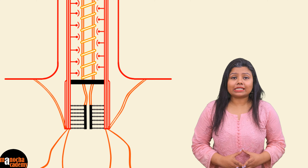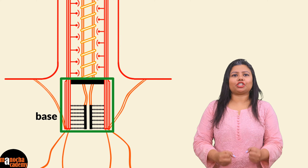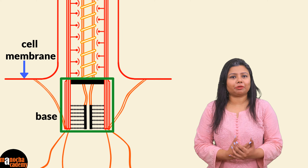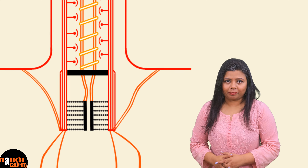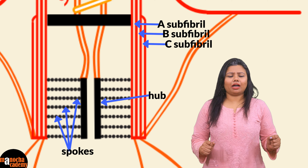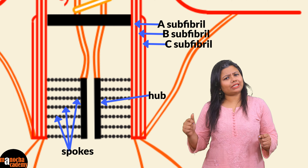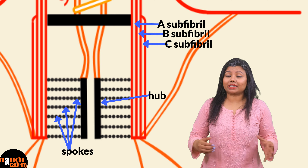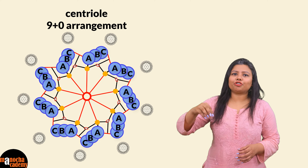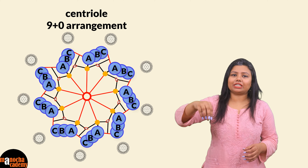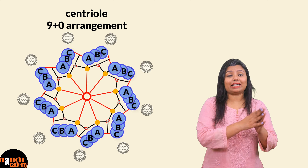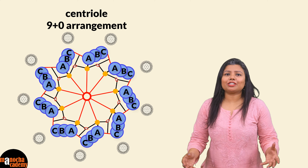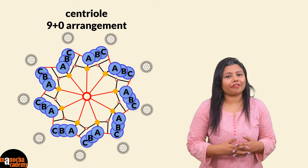The first part of the flagella structure is the base with which it remains attached to the cell membrane and cytoplasm, known as the basal body or blepharoplast. The basal body of cilia and flagella has a structure extremely similar to that of a centriole — it has nine triplets of microtubules arranged in a circle with no microtubules at the center. This is known as the nine plus zero arrangement.